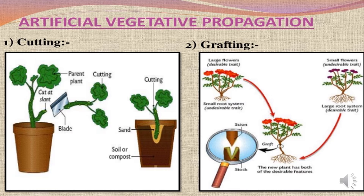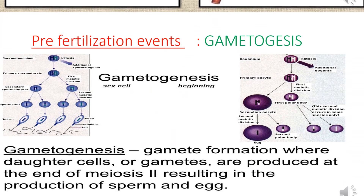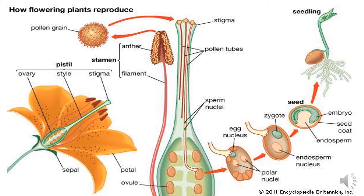You can see on your screen the artificial vegetative propagation. Picture one is showing cutting and the second one is showing grafting. In cutting, a branch of the plant is cut and planted in a different pot. In grafting, a small root system is taken and it is grafted onto another plant. This is the scion and this is the stock, and then the new plant grows.